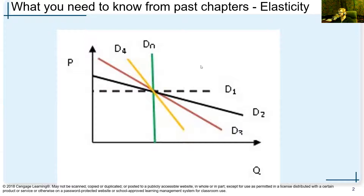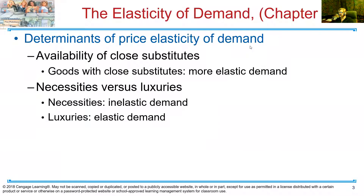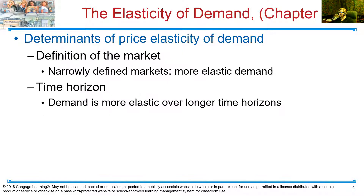Just to recap, remember what determines elasticity: the availability of close substitutes, necessities versus luxuries, how we define the market — if it's very narrowly defined, it's going to be more elastic because there are multiple substitutes to that particular item — and the time horizon. Remember, everything is more elastic in the longer term.